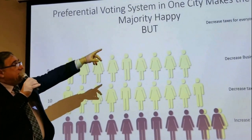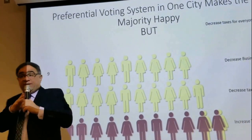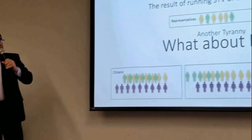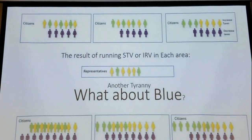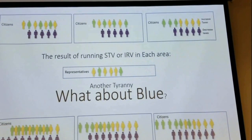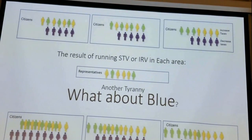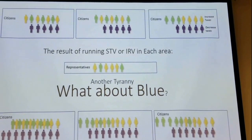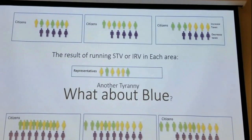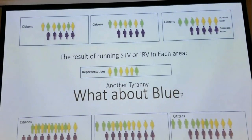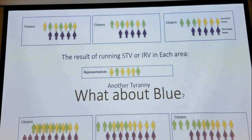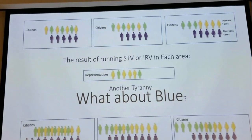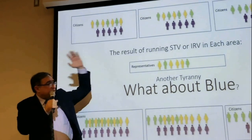Looking at the second choices of these people reveals that most people like the decrease in taxes. A candidate from the decrease-taxes-for-everyone party will go to parliament. This process is called instant runoff voting — the system automatically drops the least-wanted choice. It is also called Single Transferable Vote (STV) for a single candidate. If we switch elections from first-past-the-post to instant runoff voting, that's an improvement — at least the person who goes to parliament represents the majority's ideas.